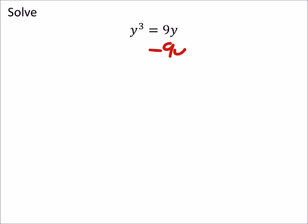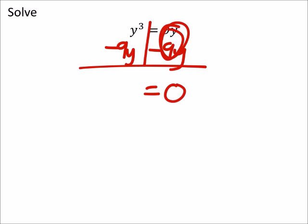So, for example, I'm going to subtract 9y from both sides of the equal sign. And these end up being a zero right here. And I've got y cubed minus 9y.